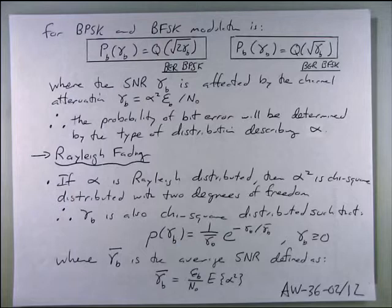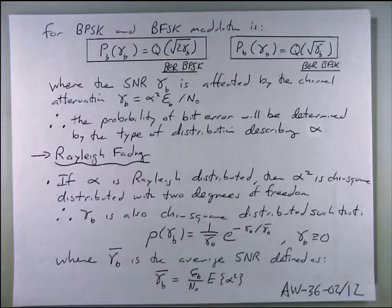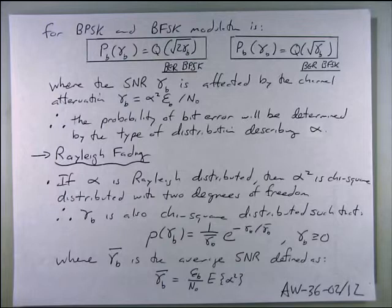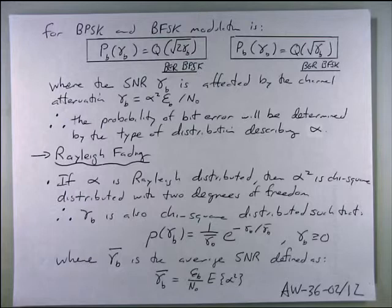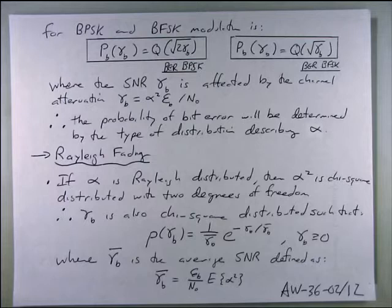For simple modulations, we want to see what is the impact of fading on performance. Assuming Rayleigh fading, signals get attenuated by alpha. When you take alpha squared, you get chi distributions — chi squared with two degrees of freedom. It turns out that gamma_B, the instantaneous signal-to-noise ratio, is also chi squared distributed.